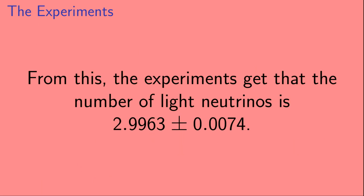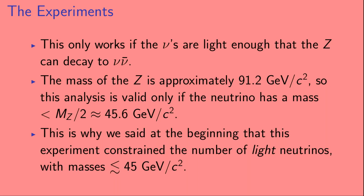This technique works only if the neutrinos are light enough that the Z can decay to a neutrino-antineutrino pair. The mass of the Z is about 91.2 GeV over c squared, so this analysis is valid only if the neutrino mass is less than M_Z over 2, which is about 45.6 GeV over c squared. This is why we said at the beginning that this experiment constrains the number of light neutrinos, where light means masses less than about 45 GeV over c squared.